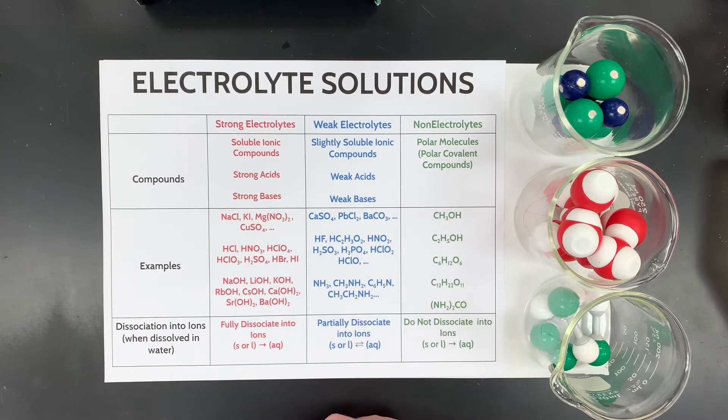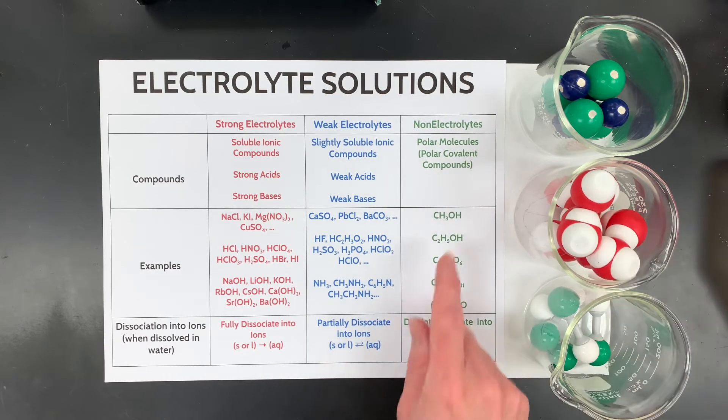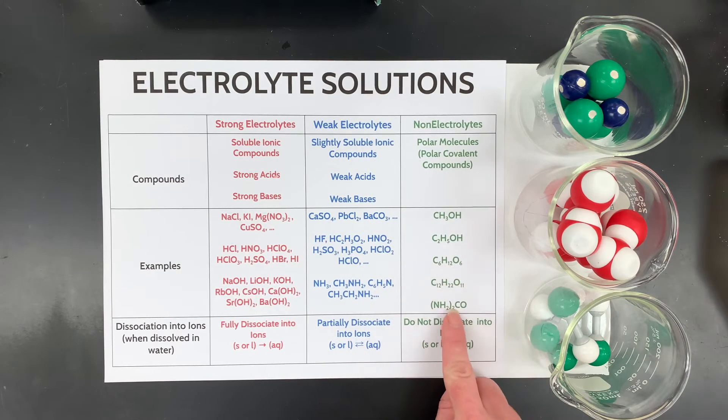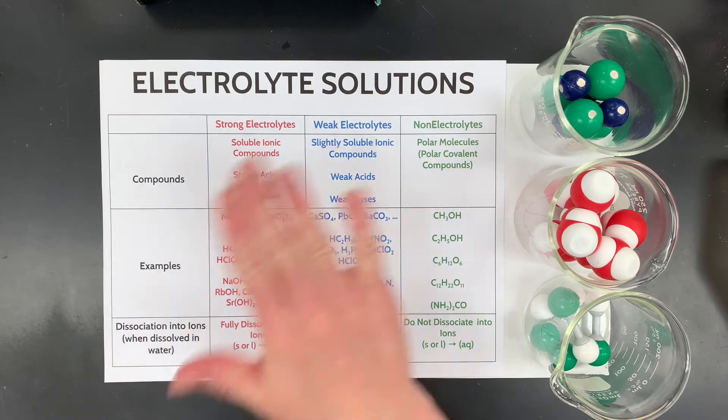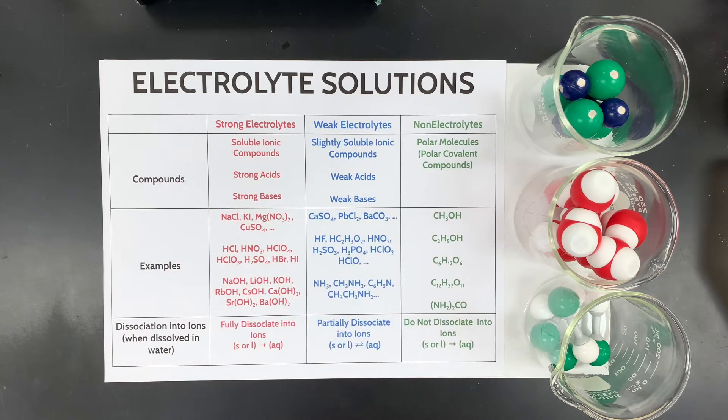Next, polar covalent compounds would be also soluble in water, like methanol, ethanol, glucose, sucrose, and urea. The key here is that they do not dissociate into ions, so there are no ions to conduct electricity, so that's why they're called non-electrolytes.